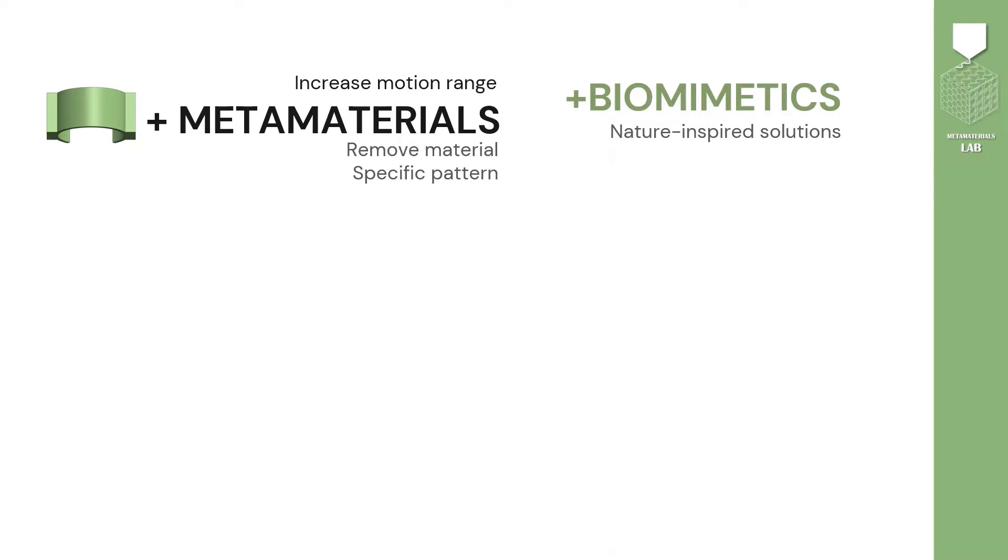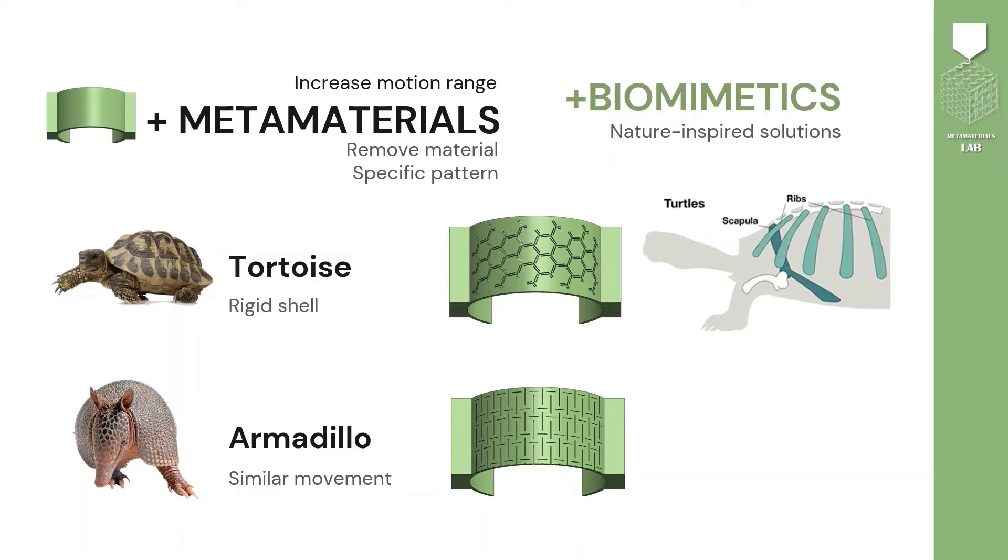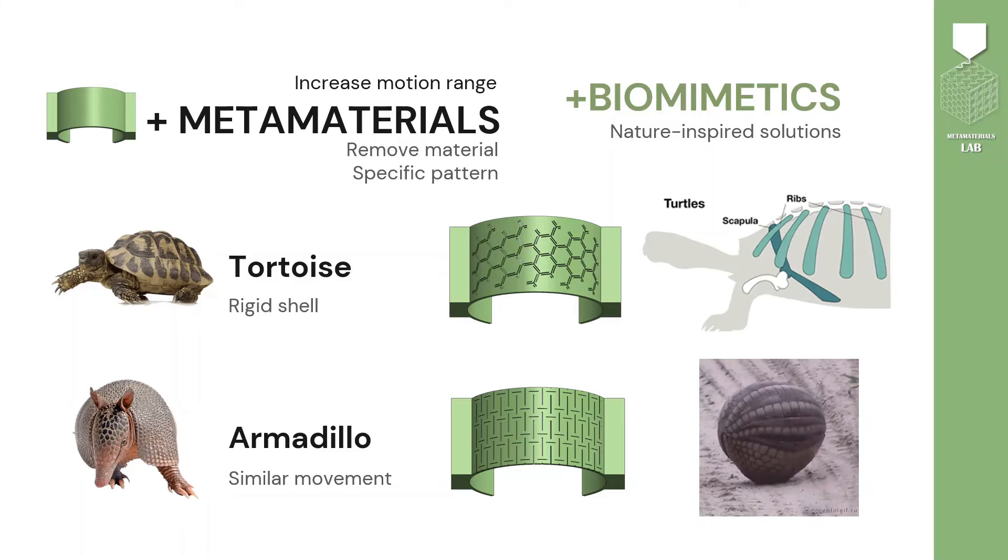So I proposed two metacompliant joints. The first one is a tortoise, which has an hexagonal pattern in its shell. My second muse is the armadillo, which has the ability to curl up, similar to the movement I want my sample to have, as you can see in the following video.